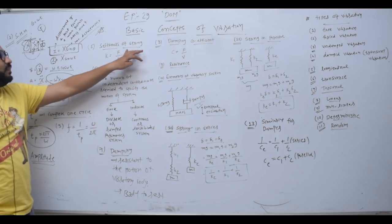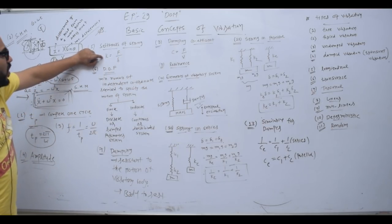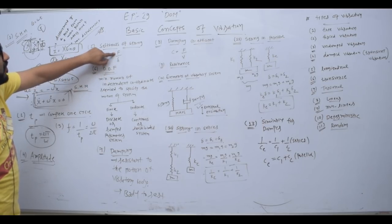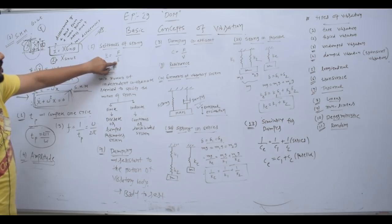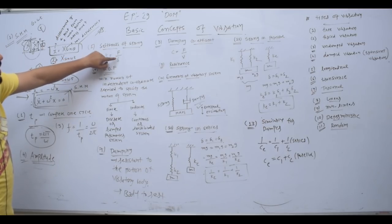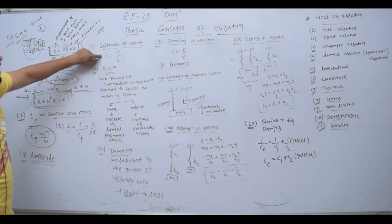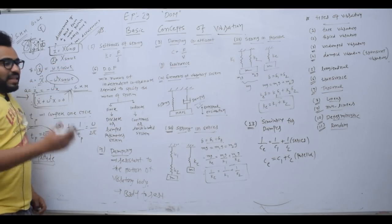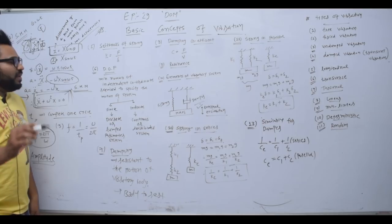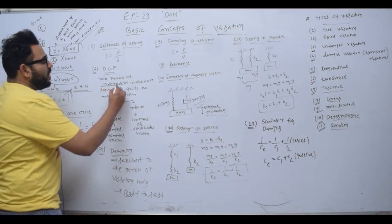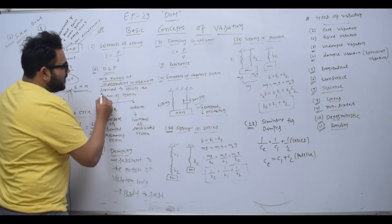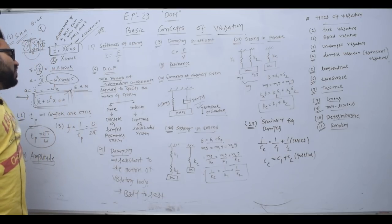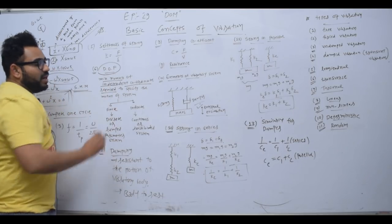Then stiffness of a spring is called capital K. The equation is K = F upon δ, where F is the force applied and δ is the deflection of the spring. So force applied upon deflection of spring is called stiffness K. Degree of freedom is the minimum number of independent coordinates required to specify the position of a system.